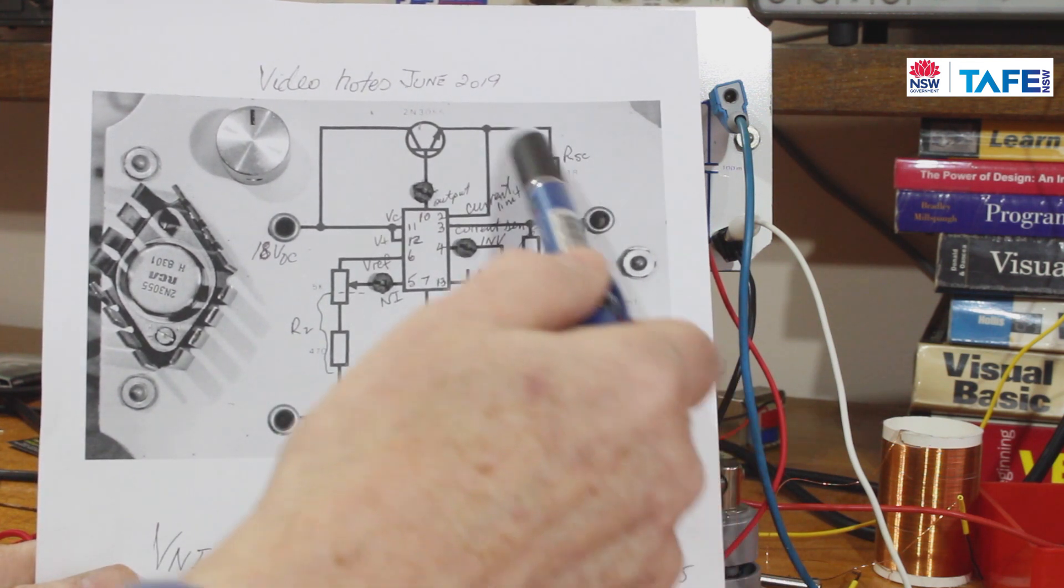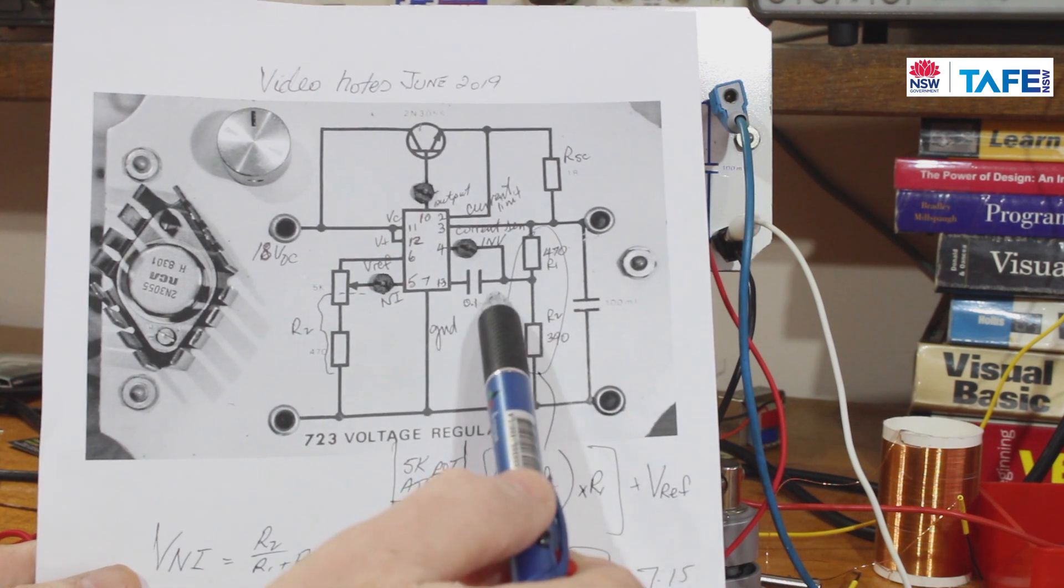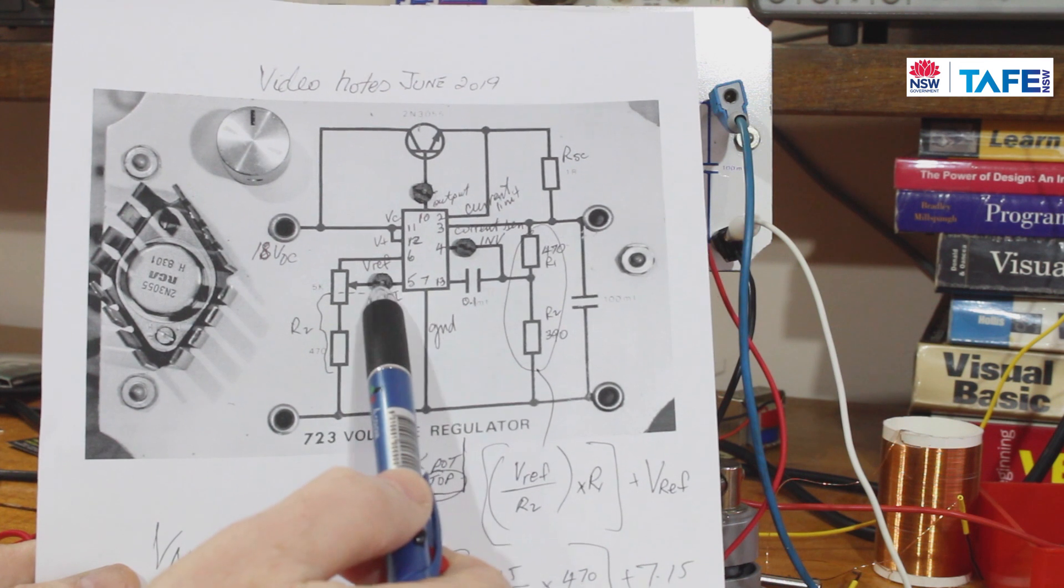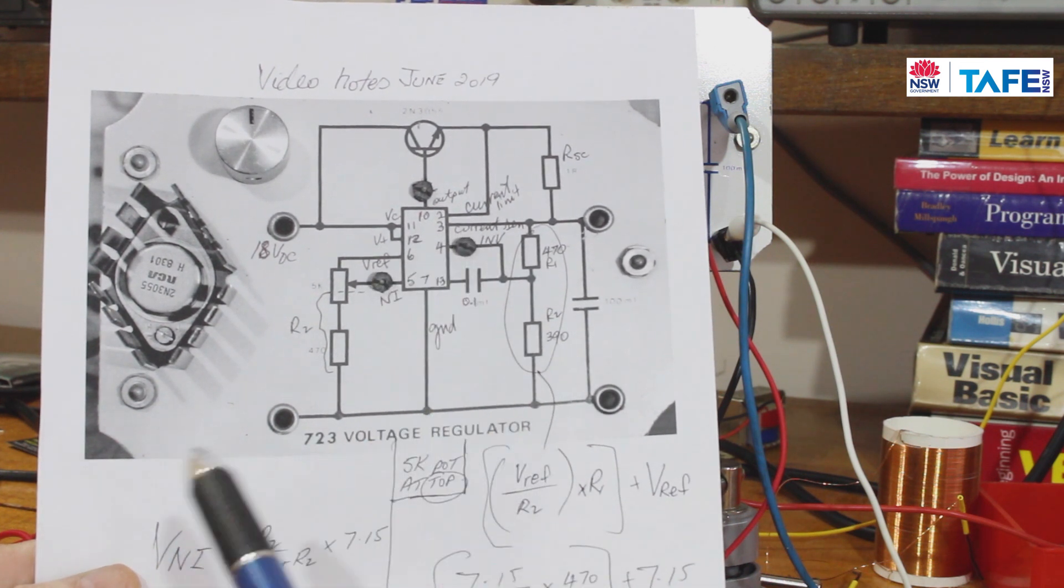So when this circuit is balanced it reaches an equilibrium. I'll have ideally the inverting input and the non-inverting input being exactly the same voltages.